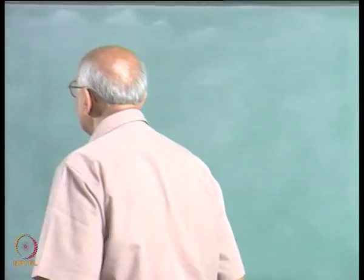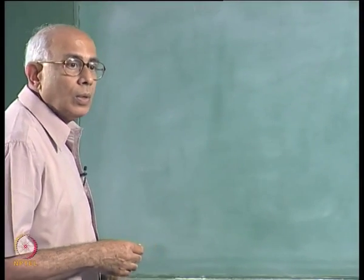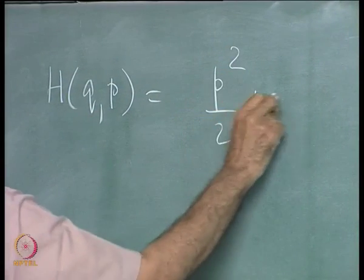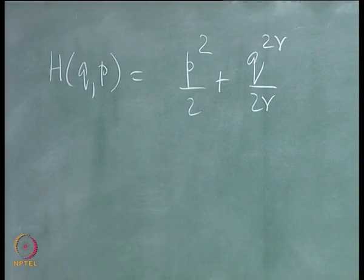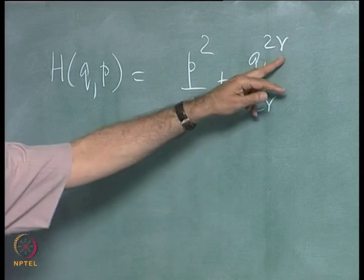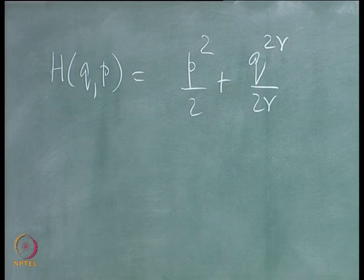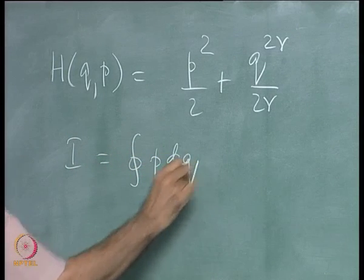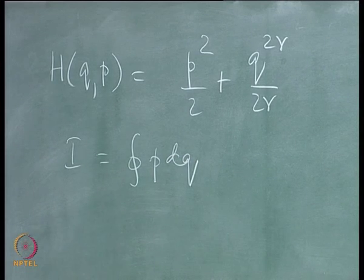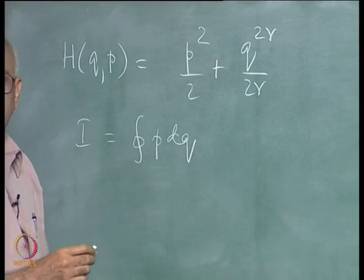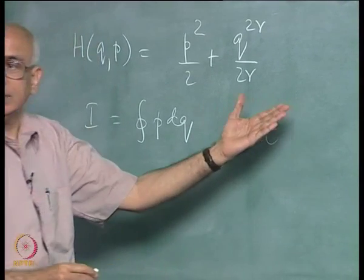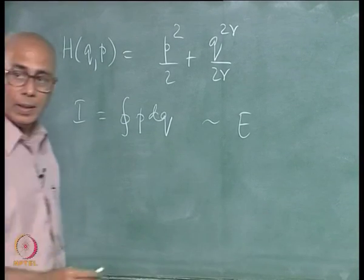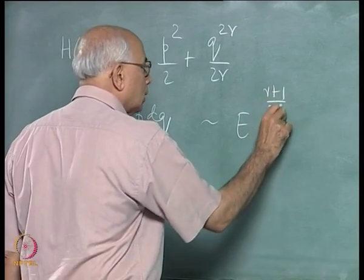We were looking at the case of one-dimensional motion in a nonlinear oscillator where the Hamiltonian function of q and p was of the form p squared over 2 plus q to the 2r over 2r, where r is a positive integer, and r equal to 1 corresponds to the simple harmonic oscillator. We computed what the action was for motion in this potential and discovered that the action, which is the integral of p dq for bounded oscillatory motion, is proportional to a certain power of the energy — specifically E to the power (r+1)/2r.